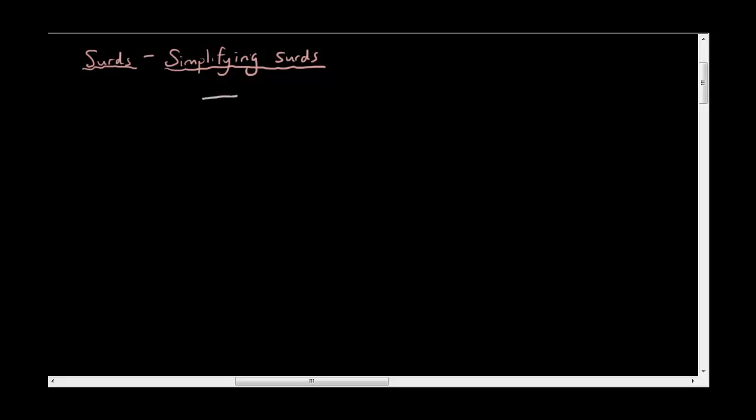So basically if we have a square root of a big number, let's say 20, the process of simplifying just means we want to rewrite this surd so that the number inside the square root is as small as possible. You're going to think of two numbers that multiply together to give you 20, and in this case I'm going to use 4 times 5. The reason why I'm going to use 4 is because 4 is a square number.